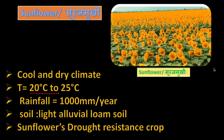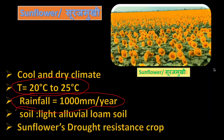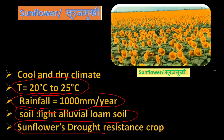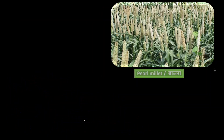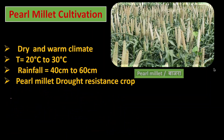Sunflower requires cool and dry climate. Temperature required is 20 to 25 degree Celsius. Annual rainfall required is around 1000 millimeter per year. Soil required is a light aluminium loam soil. Sunflower is a drought-tolerant or resistant crop.